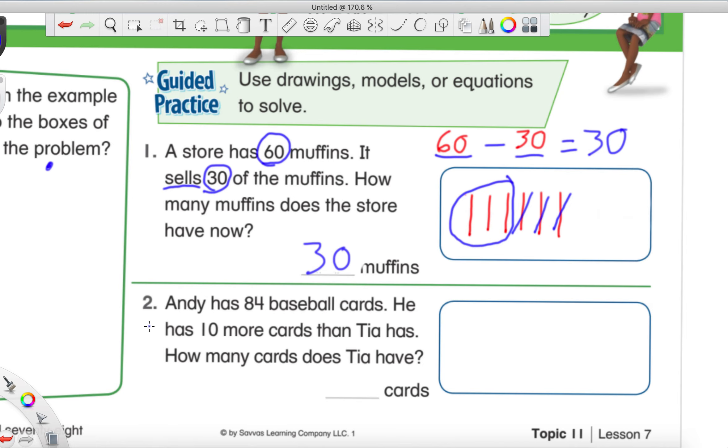All right, so for number two, I want you to try this one on your own. I'm going to read it to you, but make sure that you circle anything special that you hear. So as soon as you hear something special, circle it right away in the story problem. Andy has 84 baseball cards. He has 10 more cards than Tia has. How many cards does Tia have? So we know that Andy has how much he has. We know that it's more than Tia. We need to find out how many cards Tia has. I'll give you guys a few moments to solve this one.